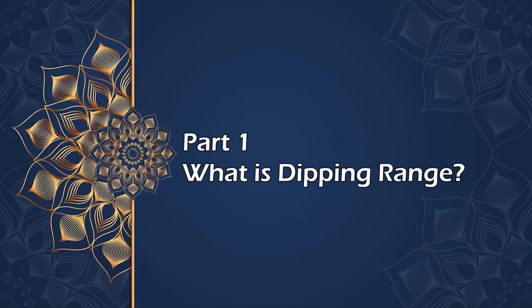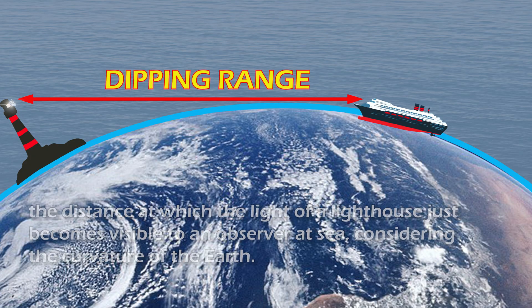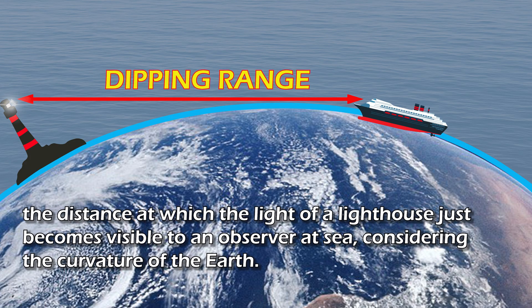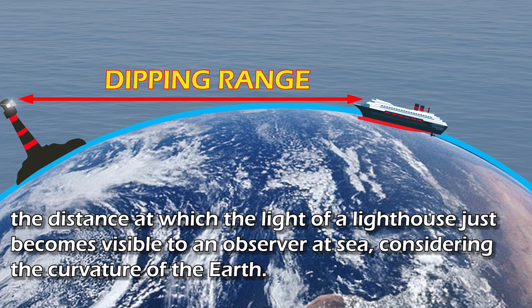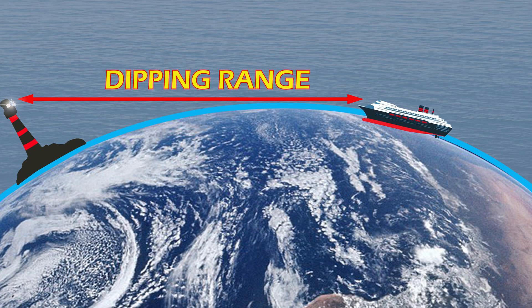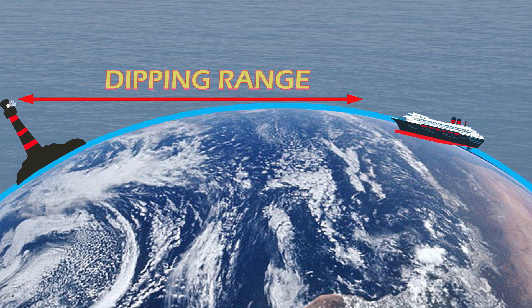The dipping range is the distance at which the light of a lighthouse just becomes visible to an observer at sea, considering the curvature of the Earth. Beyond this range, the lighthouse light dips below the horizon and cannot be seen.